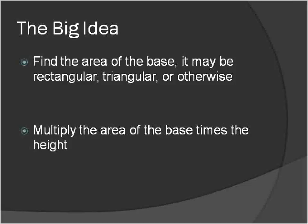The basic big idea is that to find the volume of a prism, first you find the area of the base. It may be rectangular, triangular, or otherwise. Then you multiply the area of the base times the height.